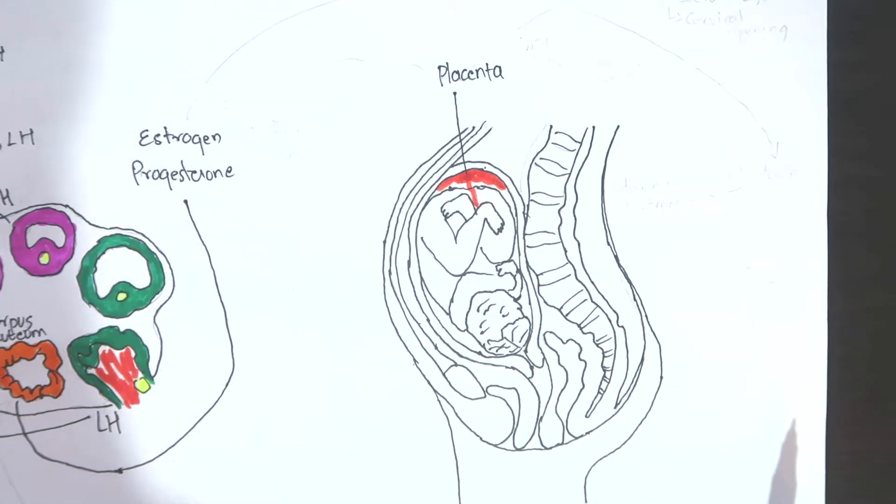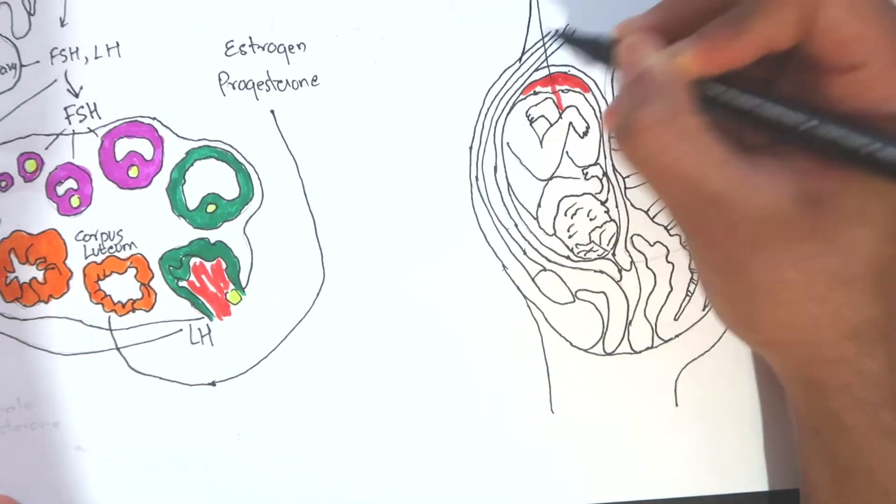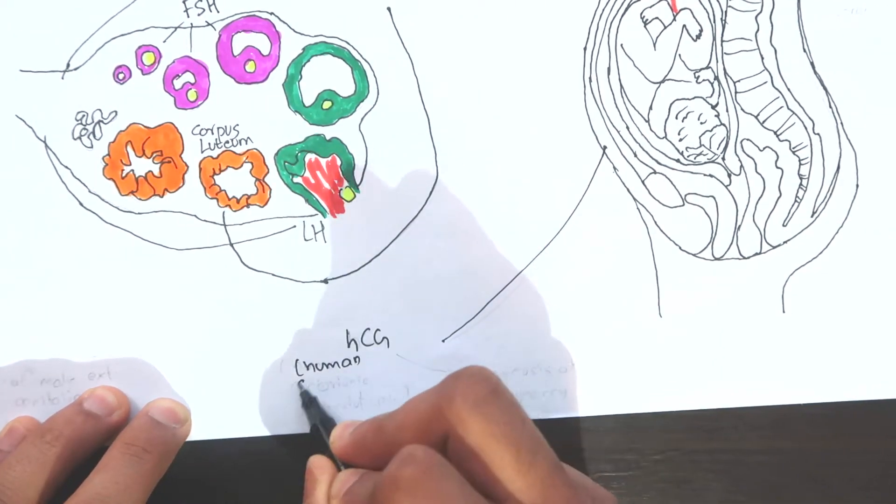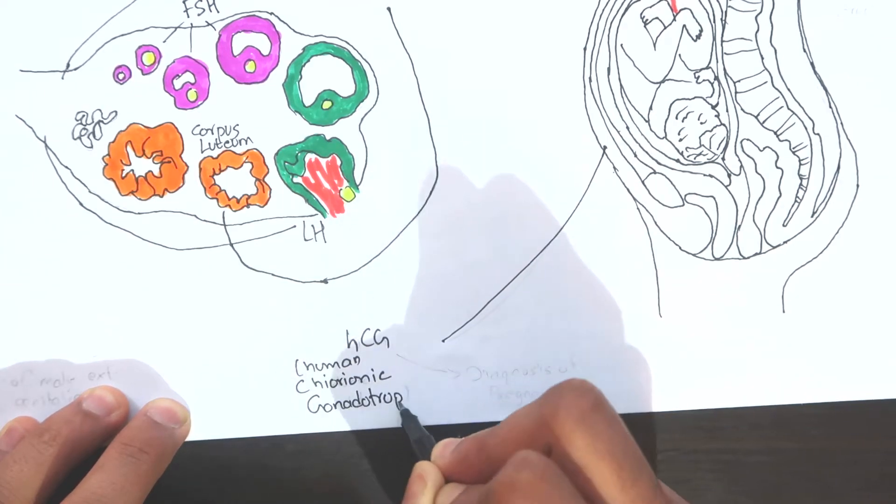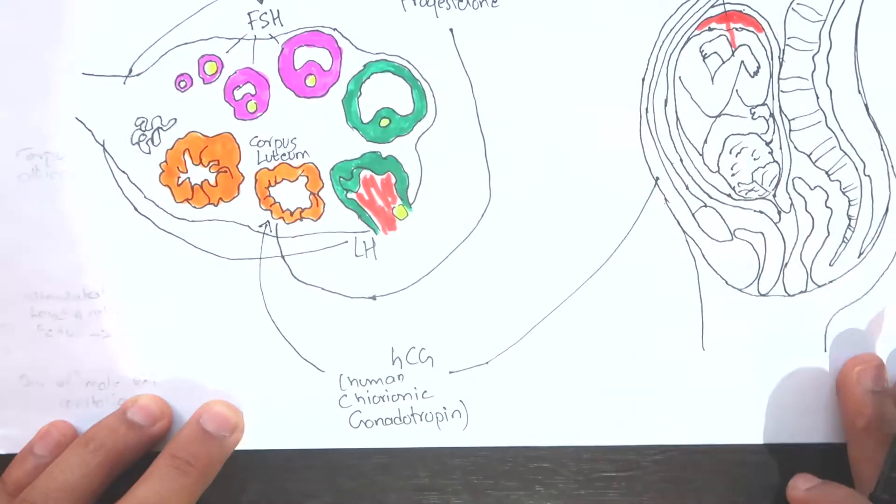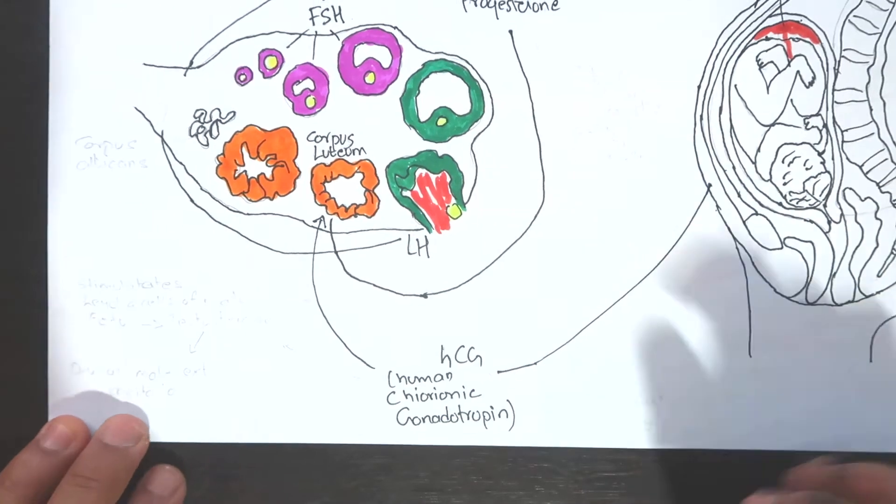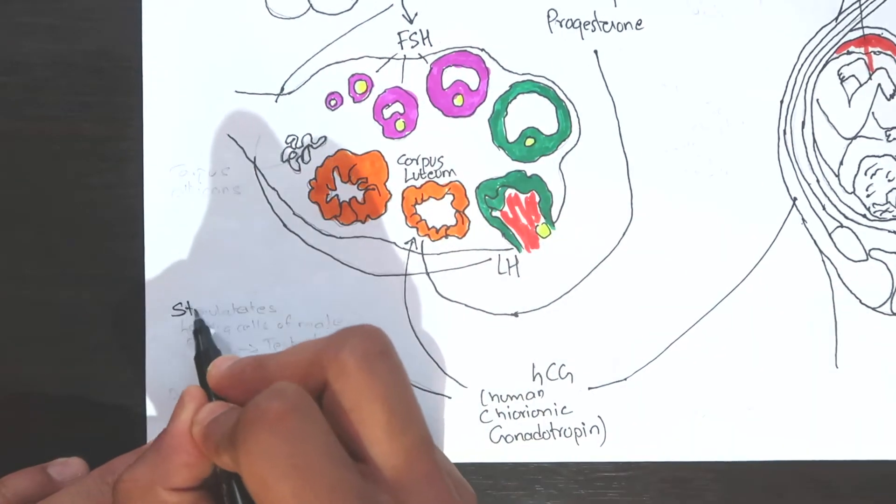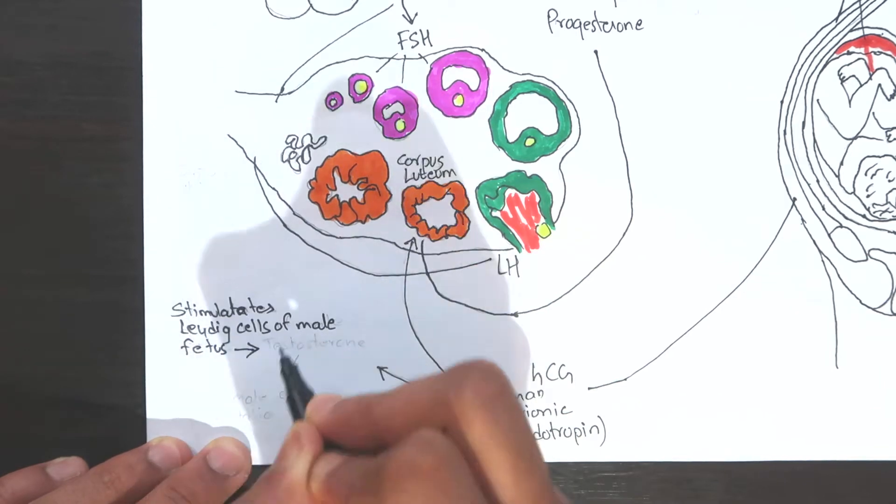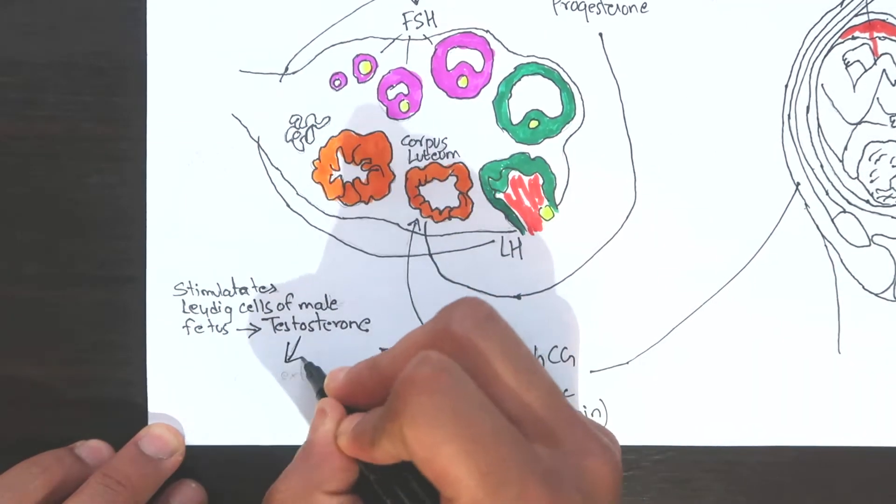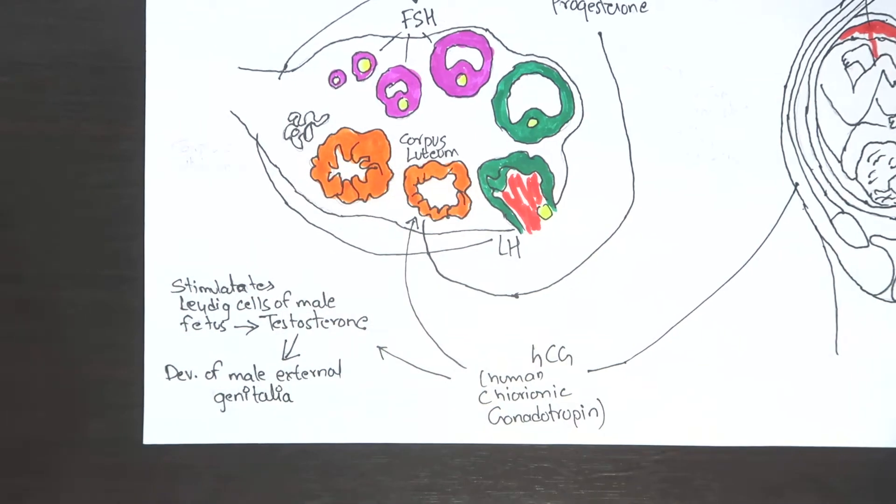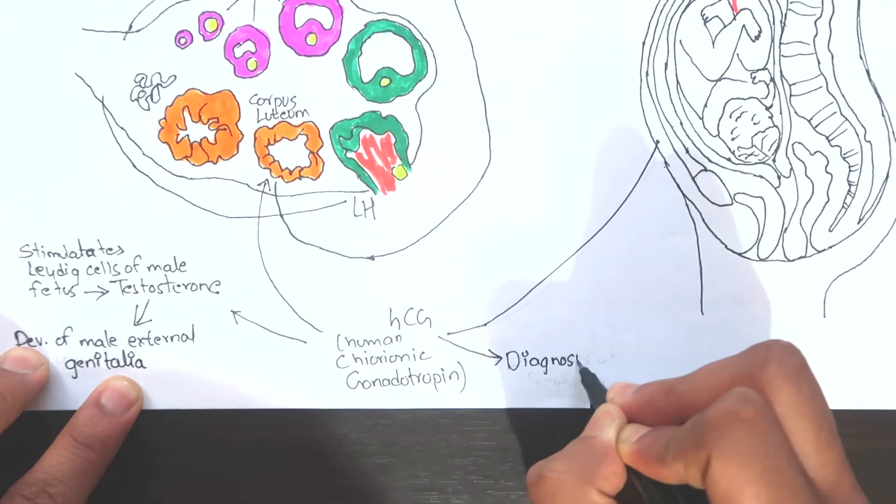The syncytiotrophoblast cells of the placenta produce HCG hormone that prevents corpus luteum from degeneration. It maintains growth and stability of the corpus luteum so that it could continuously produce estrogen and progesterone for maintaining pregnancy. HCG hormone also stimulates Leydig cells of the male fetus to produce testosterone. Thus, it is indirectly involved in the development of male external genitalia as well, and it is also used for the diagnosis of pregnancy.